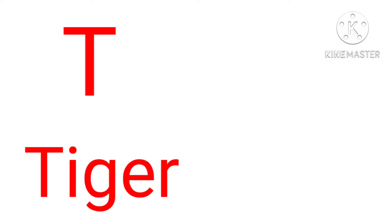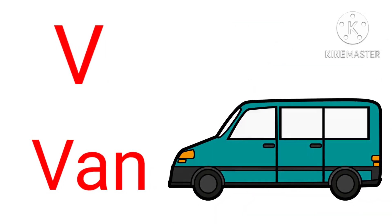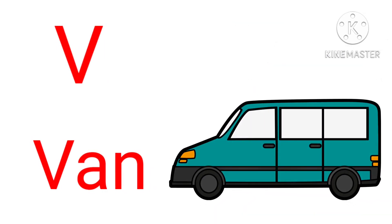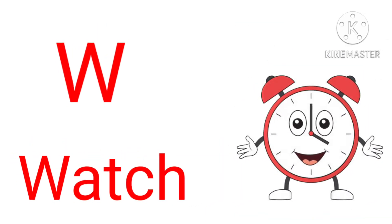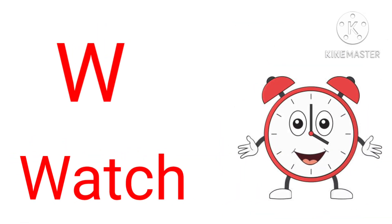T, T for tiger. U, U for umbrella. V, V for van. W, W for watch.